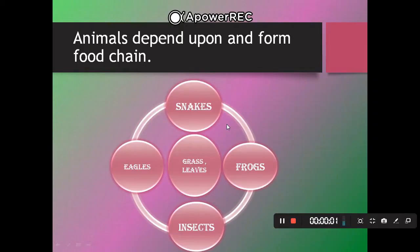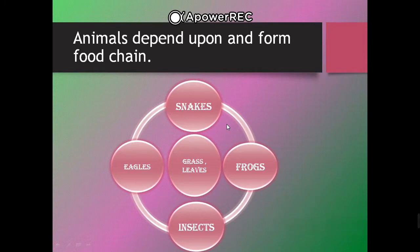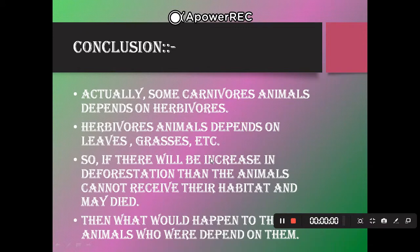Here you can see the figure: animals depend on one another and form a food chain. Snakes depend on frogs, frogs depend on insects, insects depend on eagles, and eagles depend on grass and leaves. This is the food chain, also called a food web.